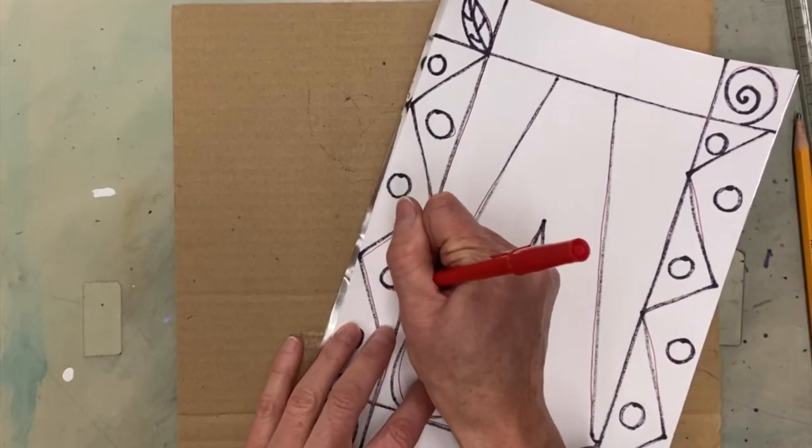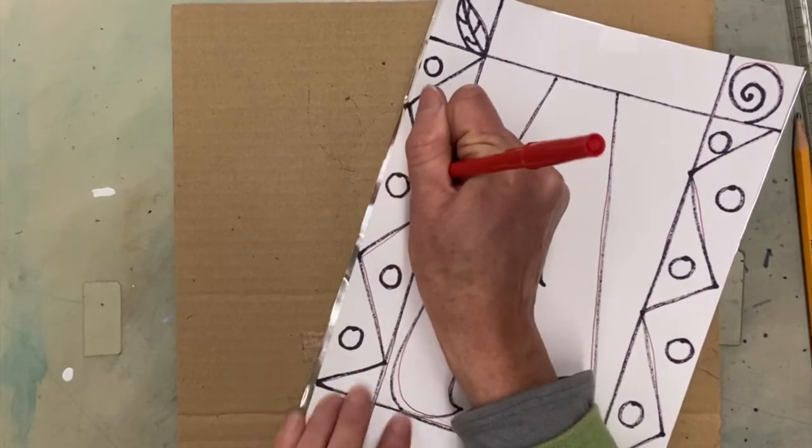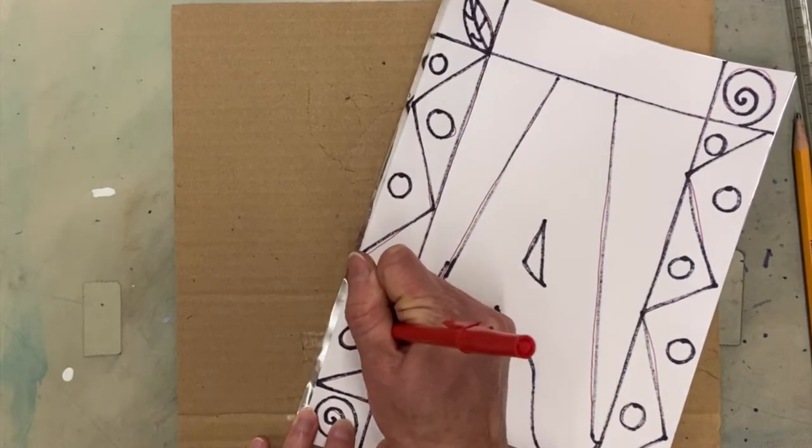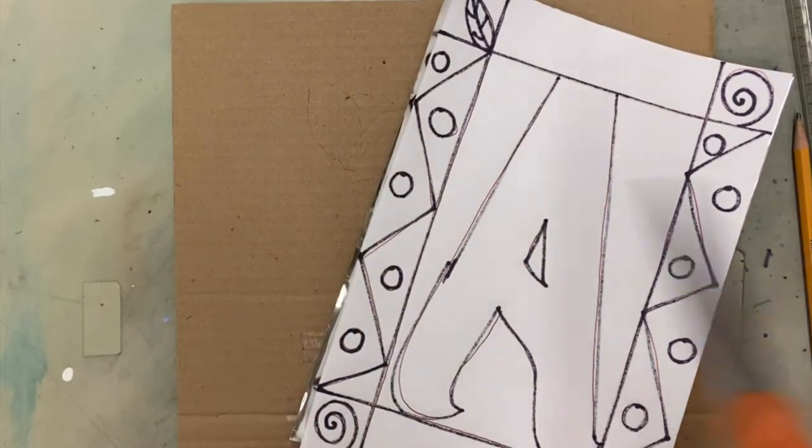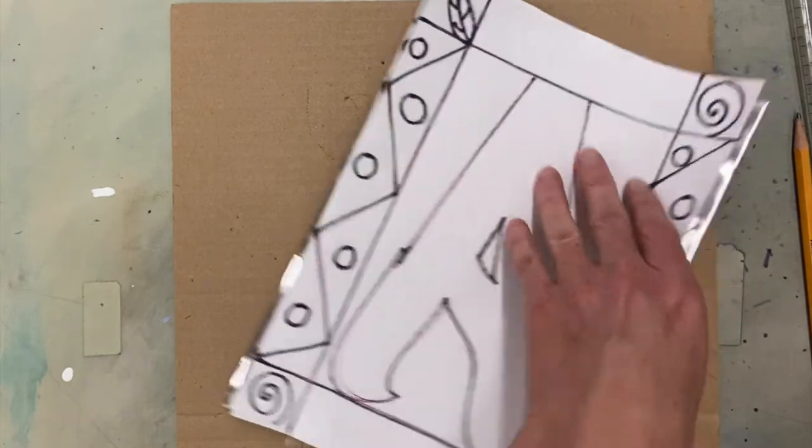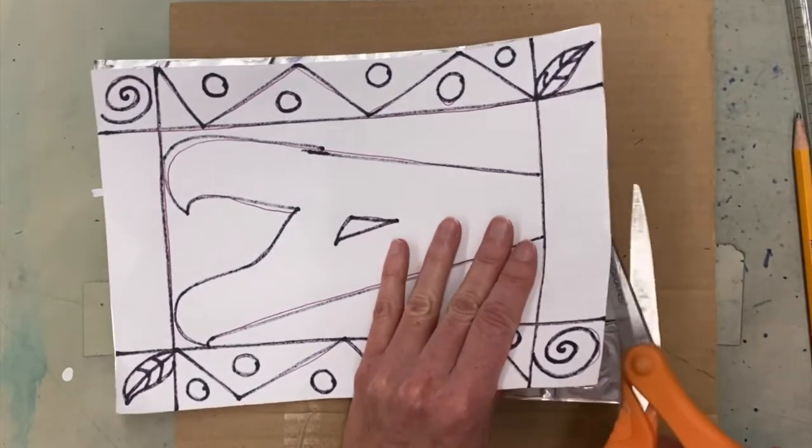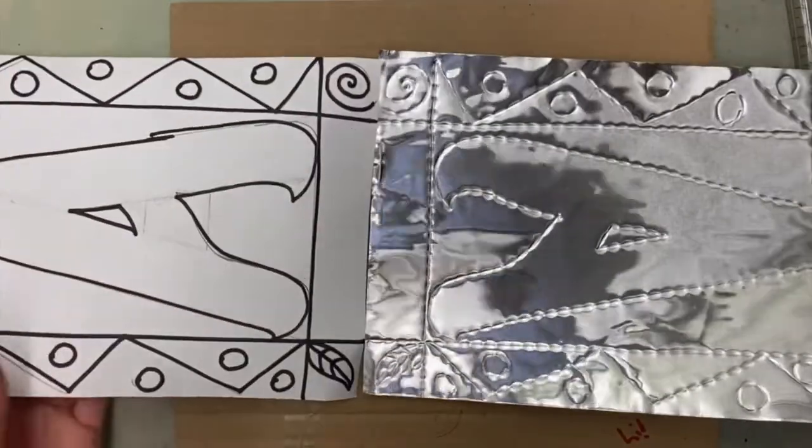So now boys and girls what I'm going to do is remove the tape and you can do that with your fingers but I often tell my kids just to take scissors, slip it in between the paper and the metal, cut and peel it off.